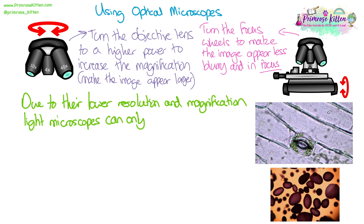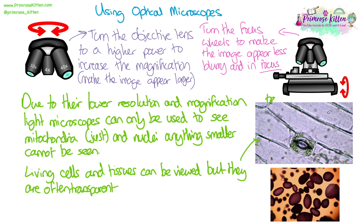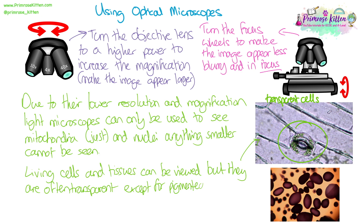Due to their lower resolution and magnification, light microscopes can only show certain organelles. We're really only able to see mitochondria just about, and nuclei — anything smaller than that cannot be seen, so no ribosomes or the other structures. Living cells and tissues can be viewed, but they're often transparent. Most cells are transparent, however cells that contain pigments like chloroplasts in guard cells around the stomata can be seen, as can pigmented structures like blood cells which will be visible in colour.